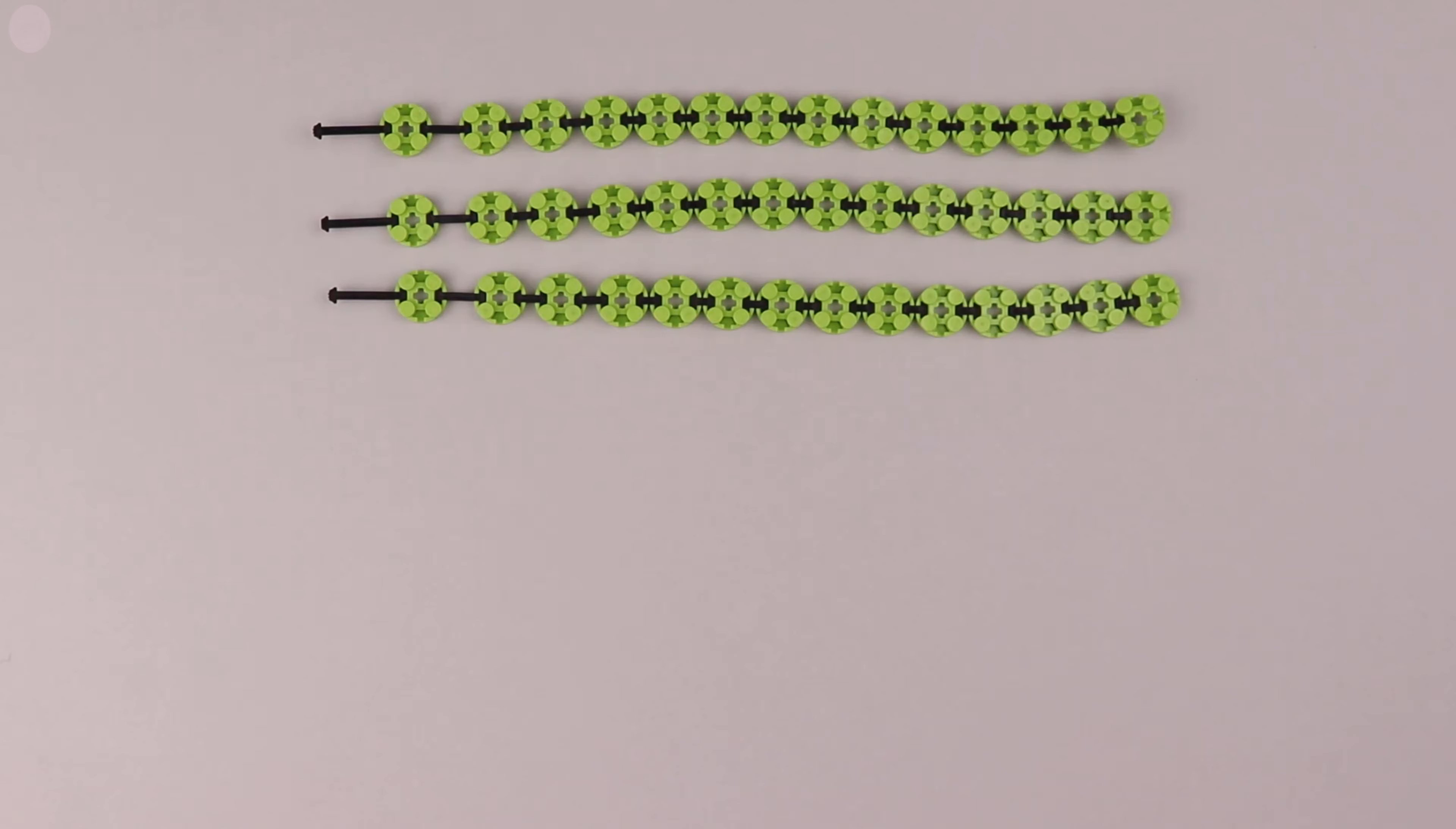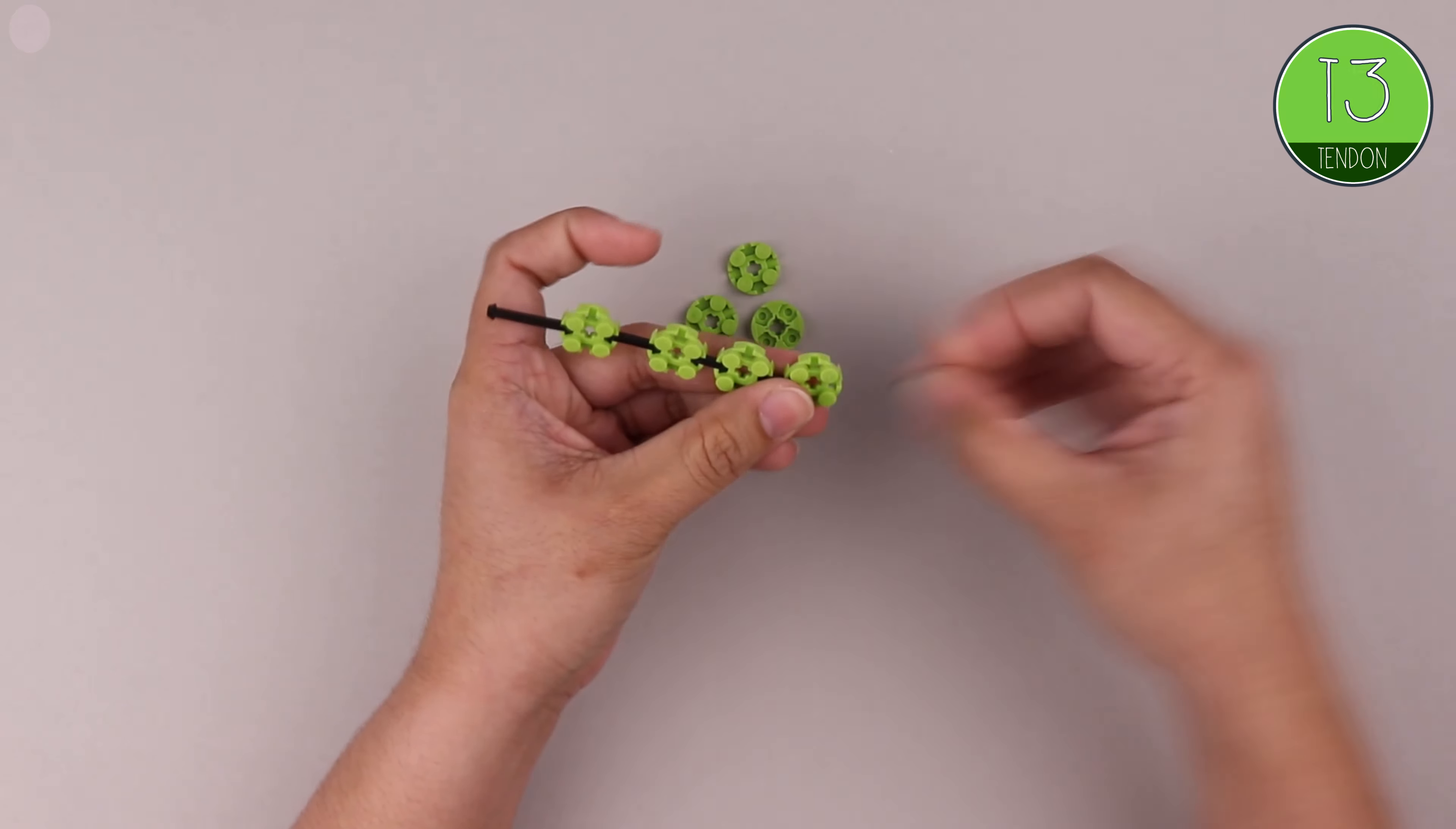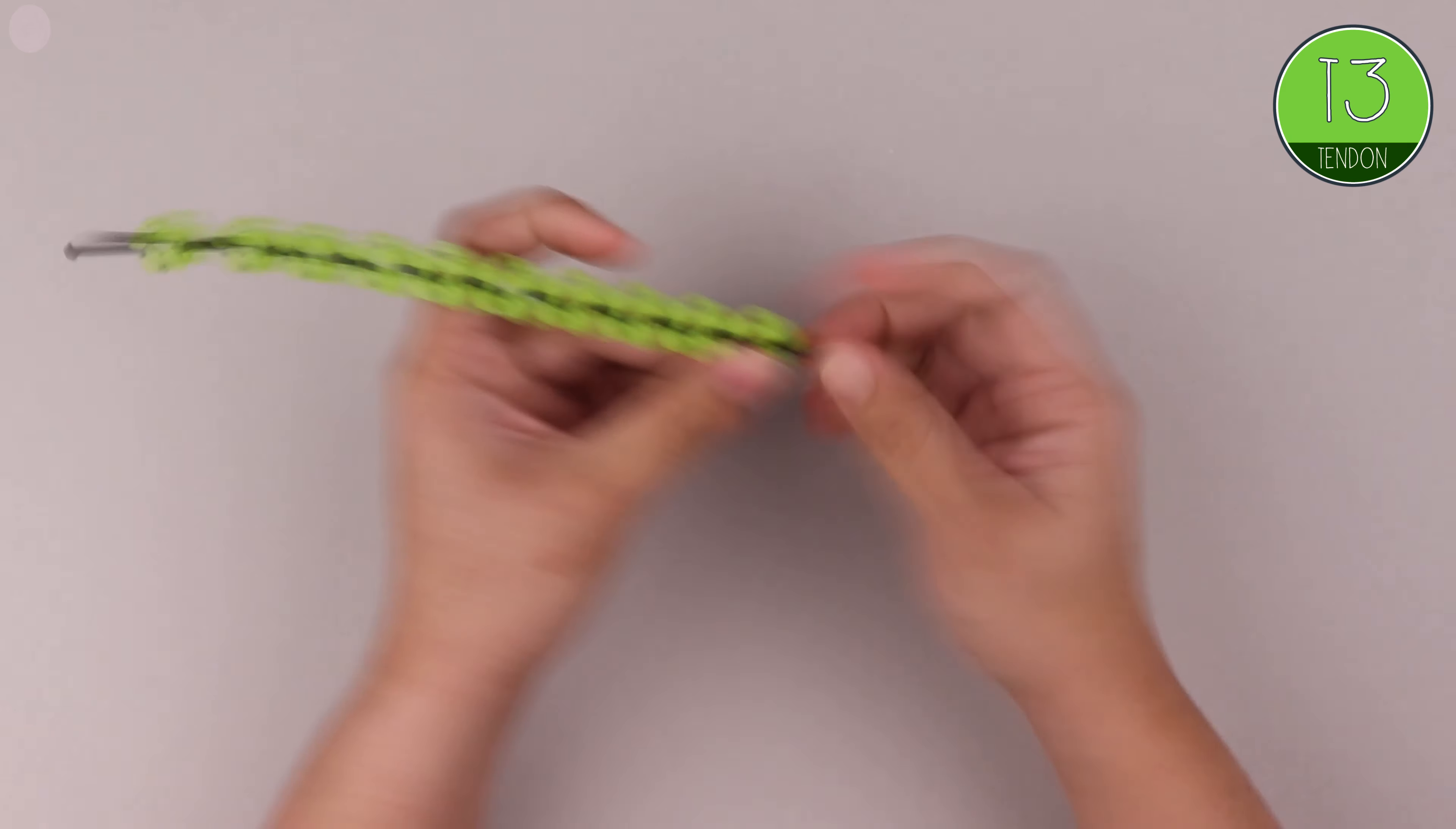So we make three more of those and now we'll make our medium length legs. Again we start with a T19, then one T11, two T5s and then the rest with T3s. And for our medium length legs we're using 11 circle bricks.